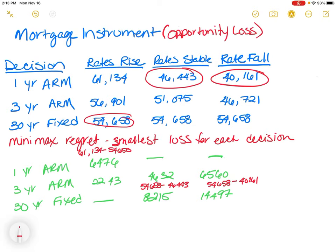Class, I'm back to talk about the opportunity loss scenario presented in your text. The opportunity loss strategy is also called the minimax regret. What we're going to do is look at the losses, because when you're making a decision, you have to consider the loss — the opportunity cost.